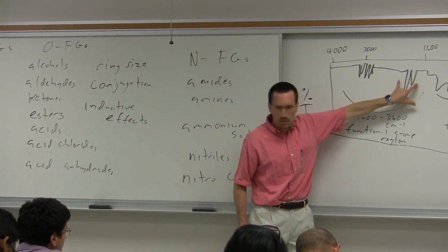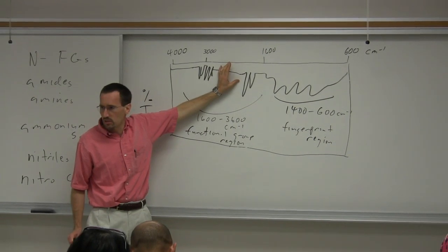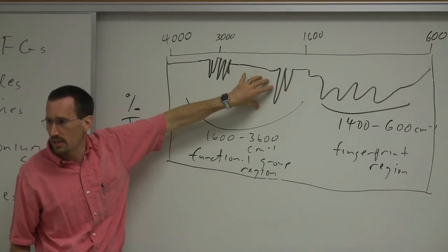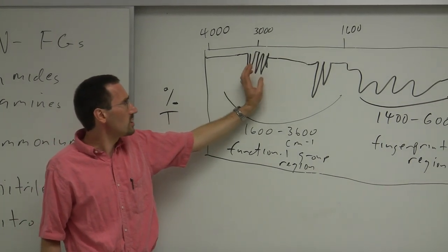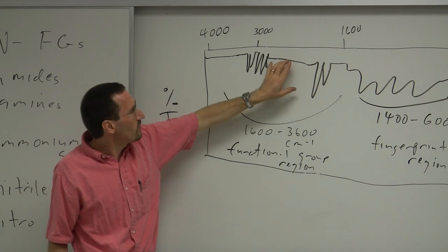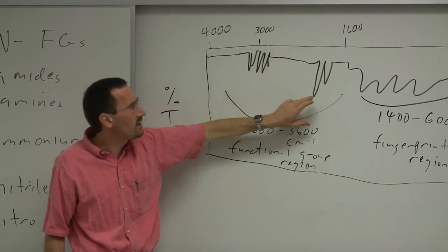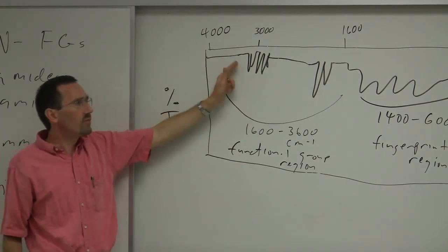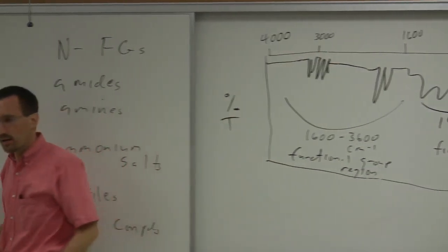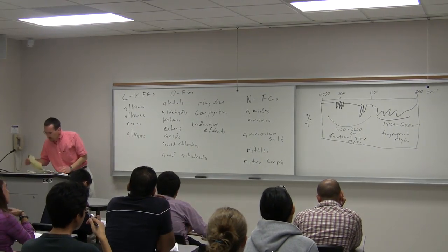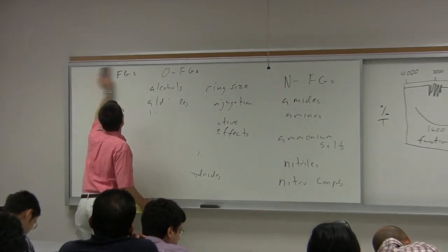My eye will be drawn to the region above 1,600. I'll look for carbonyls, and I'll generally look at the region just above 2,000 because normally you don't expect anything there — if I see anything, it's a red flag. Just below 3,000 there are things at about 2,820 and 2,720 that can be indicative of an aldehyde. Things above 3,000 clue you in to alkenes and aromatics, and further up to carboxylic acids.